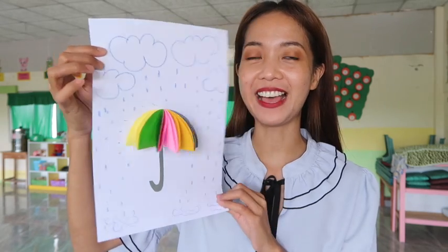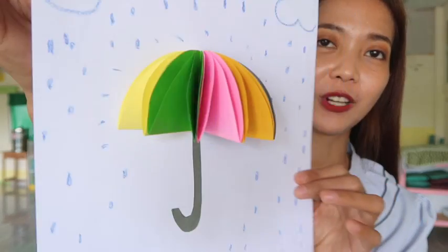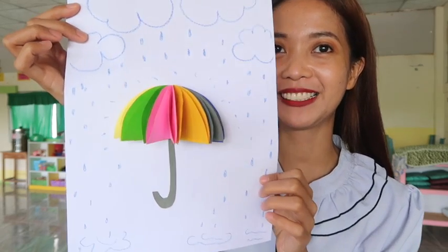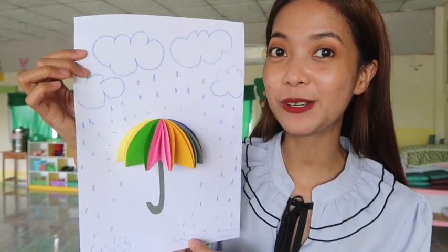Well, today's Art Time, we are going to make our postcard umbrella. And this is the one that I just made. If you look closer, this is composed of different colored papers. And this is so easy to make.